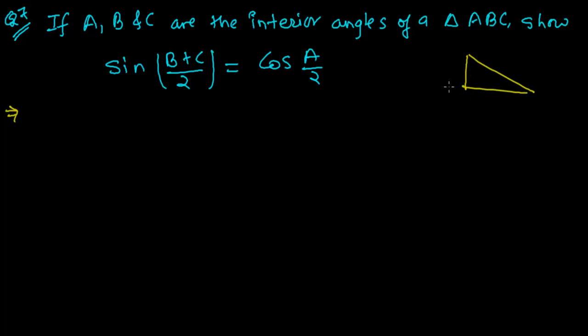Suppose this is B, C and A. This is the triangle. And these A, B and C are the interior angles.